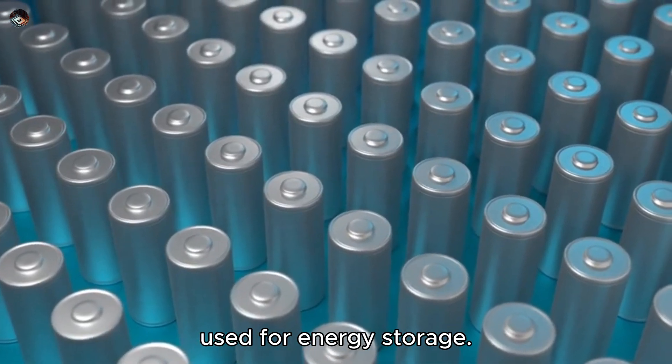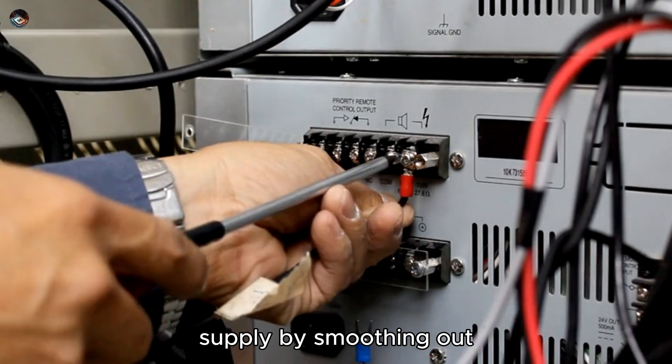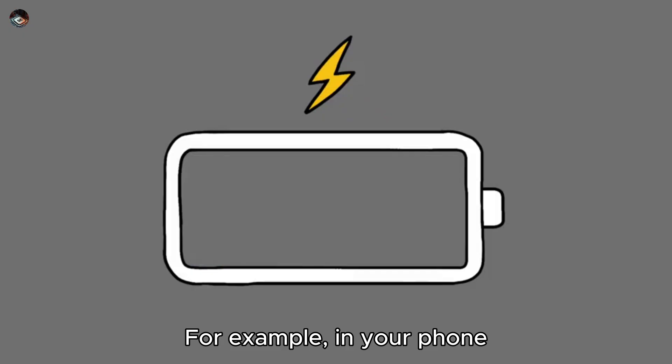First, capacitors are used for energy storage. They help stabilize power supply by smoothing out voltage fluctuations. For example, in your phone charger, capacitors ensure a steady flow of power.